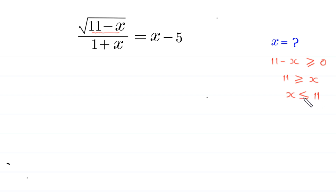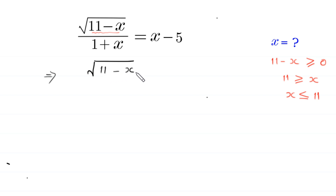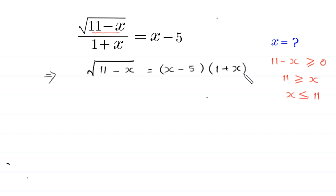Now let's continue. If we multiply both sides by (1 plus x), this implies that the square root of (11 minus x) is equal to (x minus 5) times (1 plus x).